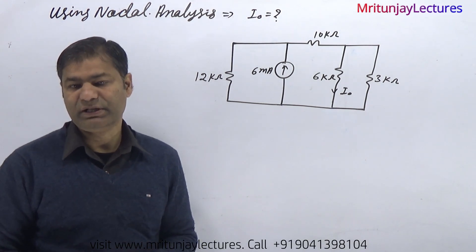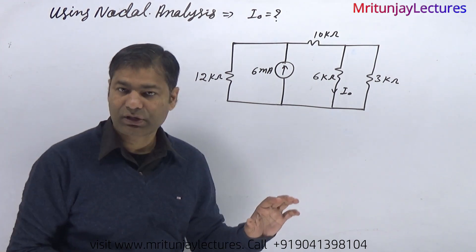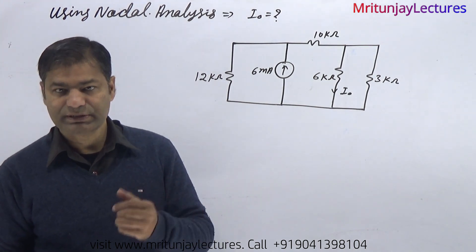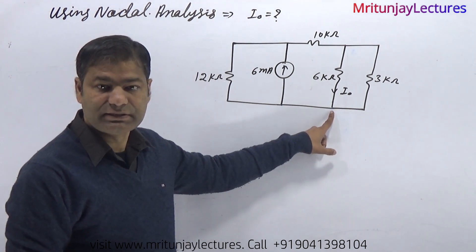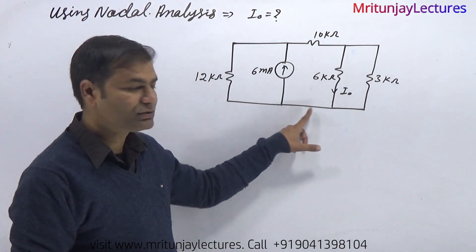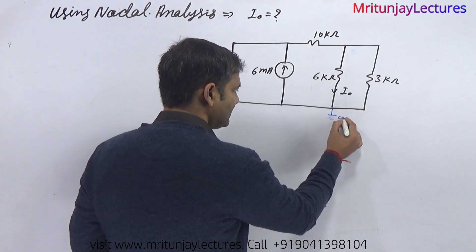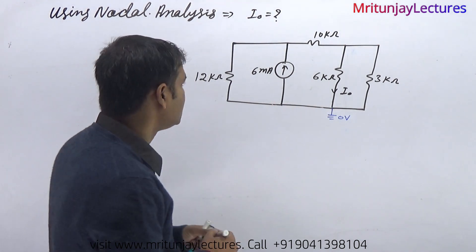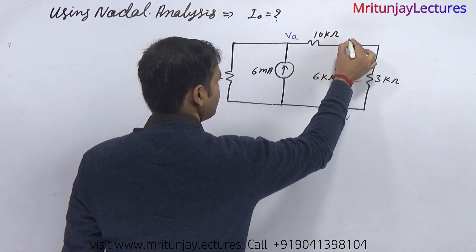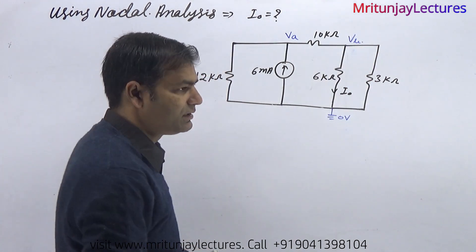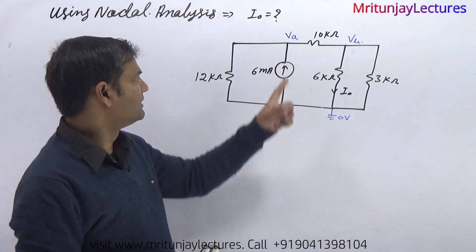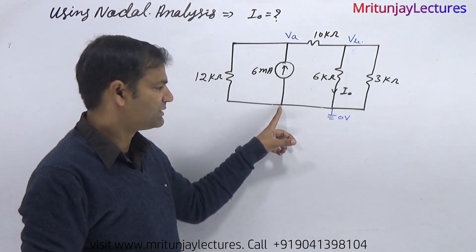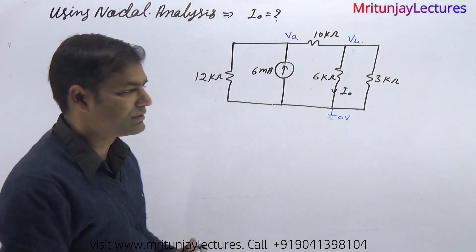We will determine i0 with the help of nodal analysis. According to nodal analysis, at any node considered as the datum node — the datum node means it is the reference node with zero voltage. So if you consider this node is zero, and this node is also zero, because there is no resistance between these two, they are at the same potential. Now assign all nodes corresponding voltages: that point is Va, that point is Vb, and this node is zero voltage.